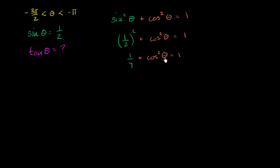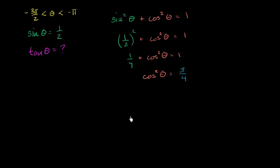We subtract 1 fourth from both sides, and we get cosine squared theta is equal to... subtracting 1 fourth from the left-hand side makes it go away, and 1 minus 1 fourth is 3 fourths. So cosine squared theta equals 3 fourths.